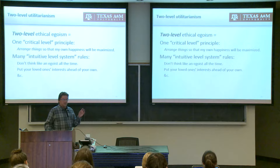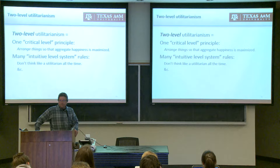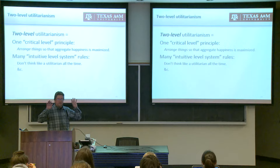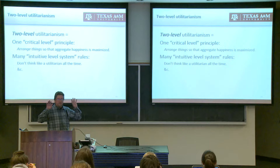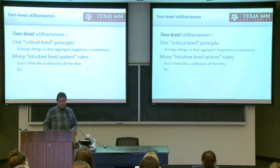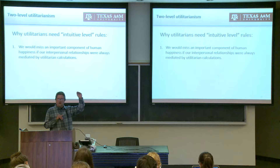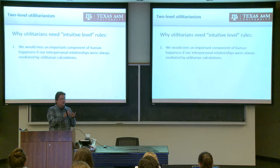The two-level utilitarian view is a direct analog of this. The utilitarian would miss out on the best goods in human life if consciously calculating all the time. So instead, the general view is to arrange things to maximize aggregate happiness over time, and part of that involves not thinking like a utilitarian explicitly all the time. Utilitarianism is the driving background principle, but it drives you to internalize certain intuitive-level rules that you act habitually according to.